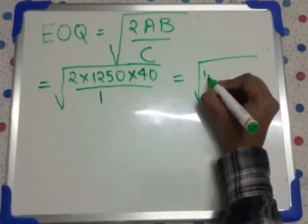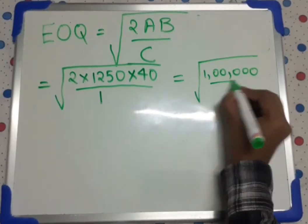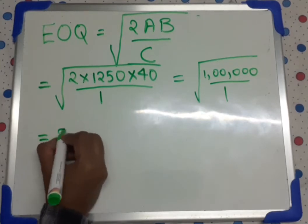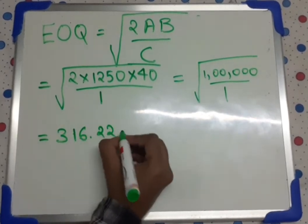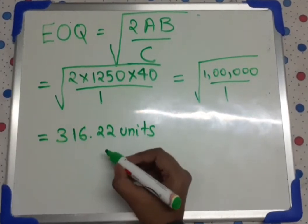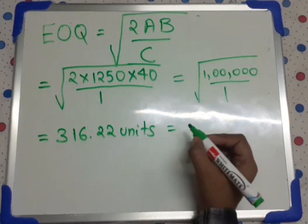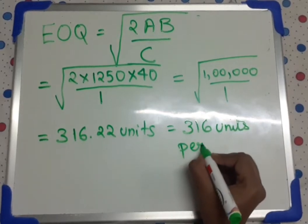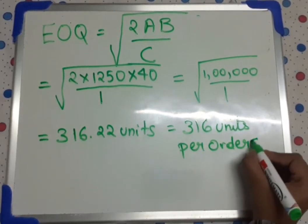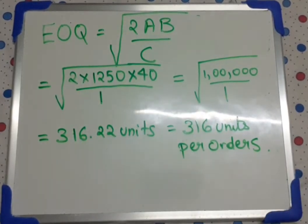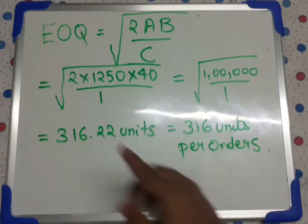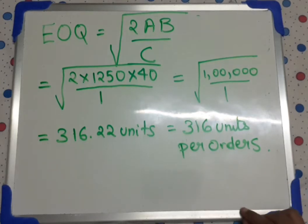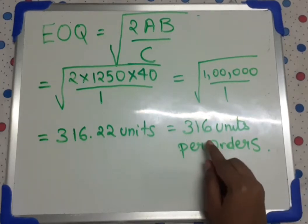It is the square root of 1 lakh. So what is the square root of 1 lakh? Using a calculator, we found out the answer — it is 316.22 units. Now we can't order 0.22 units, so we will use estimation. So it is 316 units per order. So what is economic ordering quantity? It is the most cost-efficient ordering quantity. In one order, we have to order 316 units.